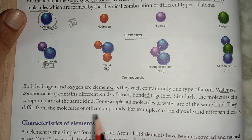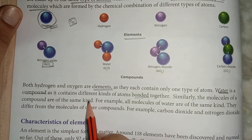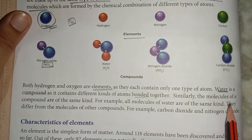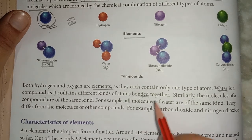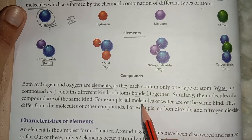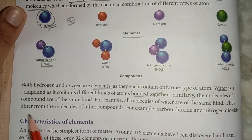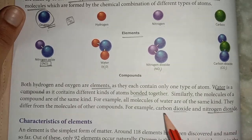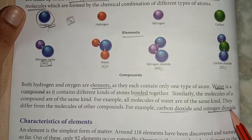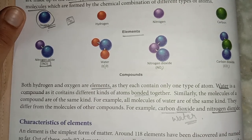Molecules of a compound are all of the same kind, but they differ from the molecules of other compounds. For example, carbon dioxide molecules differ from water molecules. Within one compound, all molecules are the same; across different compounds they differ. Now our next topic: we have studied elements and compounds. We will now read the characteristics of elements — what their features are.